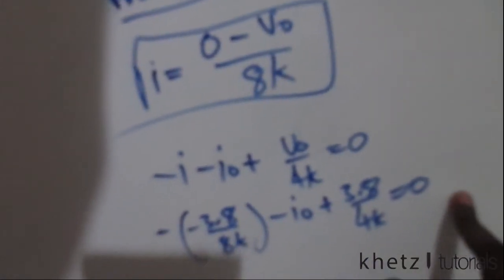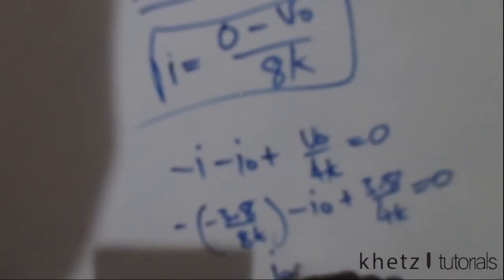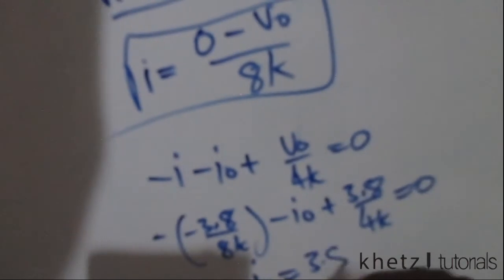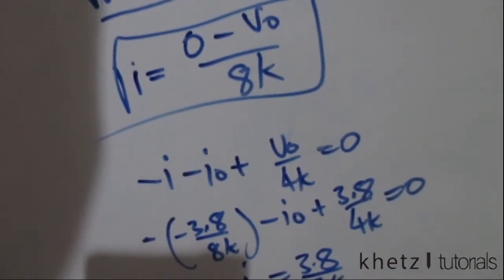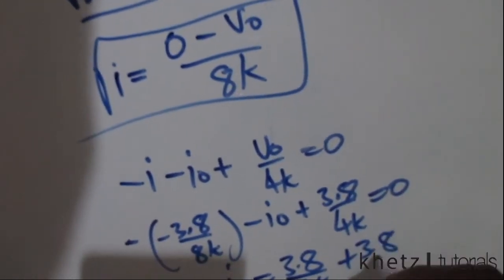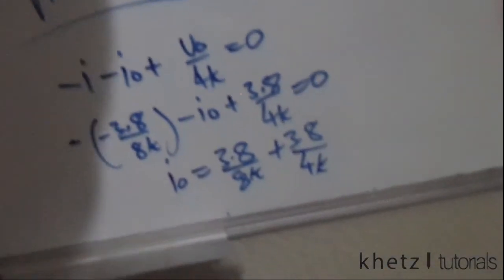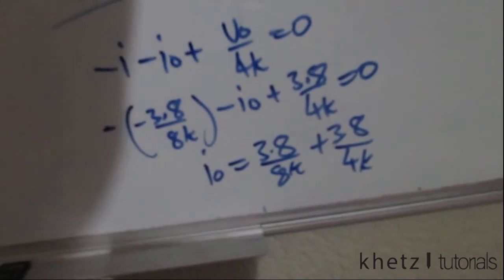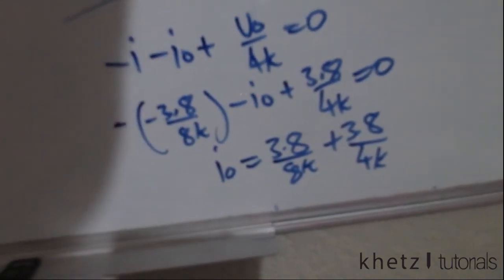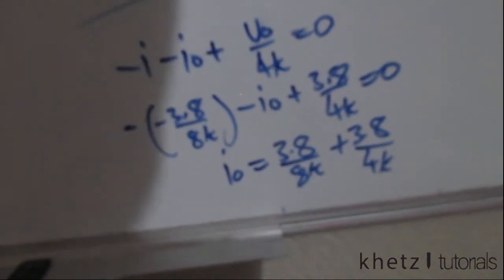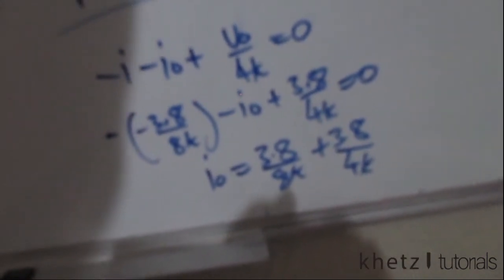And taking this io to the other side of the equal sign, then io will ultimately be equals to 3.8 divided by 8k plus 3.8 divided by 4k. So you can punch this into your calculator and find the answer for the value of io.